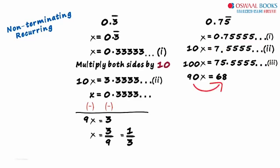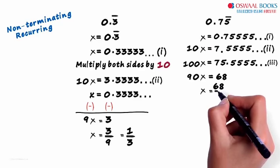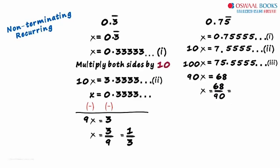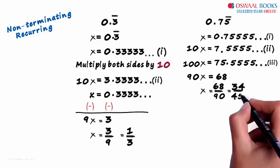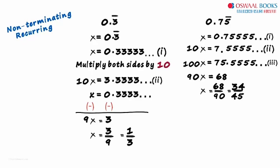Transposing 90 to the other side, x would equal 68 by 90 which can be reduced to 34 by 45. So that is how we converted a mixed recurring decimal to the form p by q.